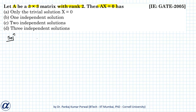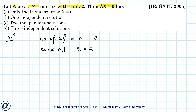Because A is of size 3 by 3, the number of equations in our system is 3. Because the rank of matrix A is 2, there is no minor of order greater than 2 with a non-zero value. The only minor of order greater than 2 in this matrix is the determinant of the whole matrix, and that must be 0 since the rank is 2. So we can conclude that the determinant of A is 0.